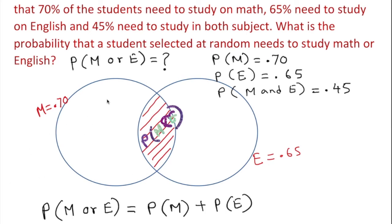We add the probability of math, we add the probability of English. Then we subtract this little piece. The question doesn't ask us for this piece here. Math or English - we are not looking for two things happening at the same time. So we have to subtract that. So minus probability of math and English.